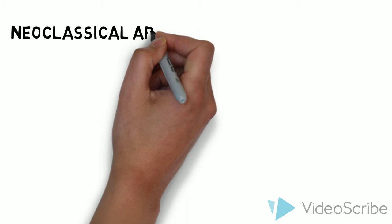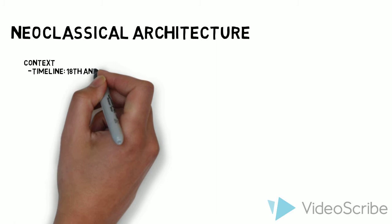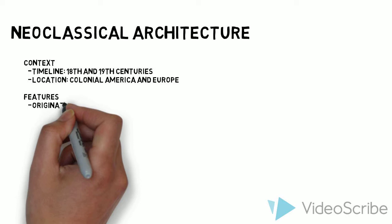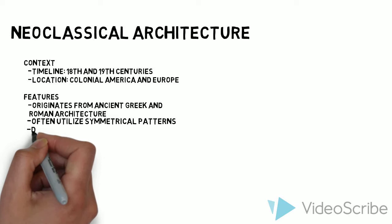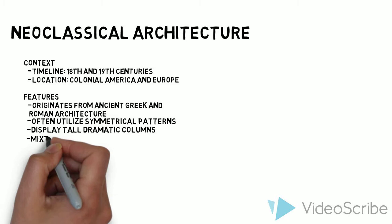Now we can introduce neoclassical architecture. Similarly to Georgian architecture, neoclassical occurred during the 18th and 19th century in colonial America and Europe. Its styles are reminiscent of ancient Greek and Roman architecture through features such as pattern designs and tall dramatic pillars. This revival of traditional styles took advantage of the new engineering methods and materials that arose from the Industrial Revolution.